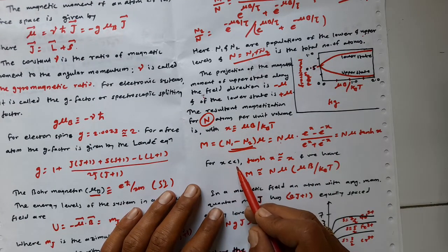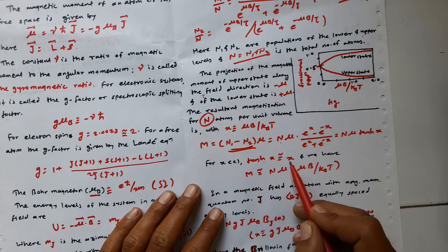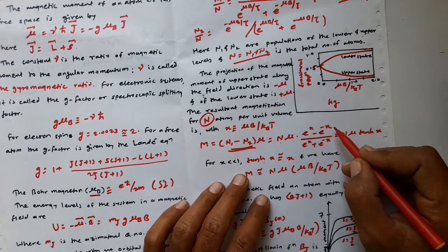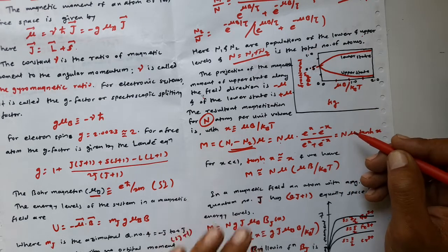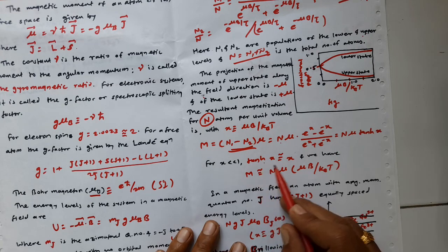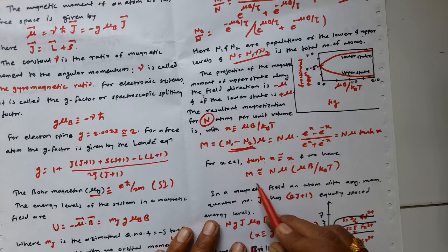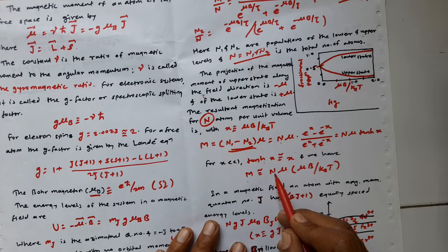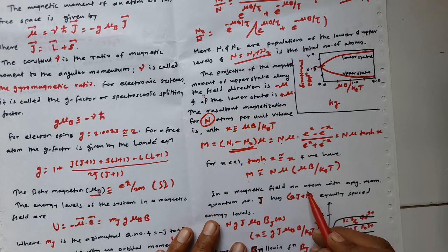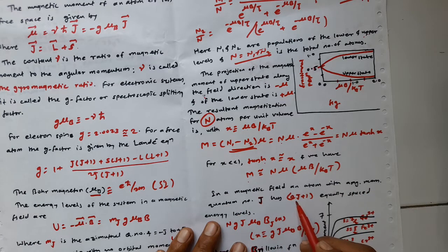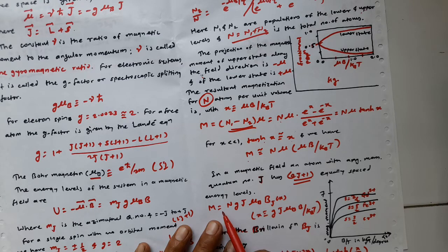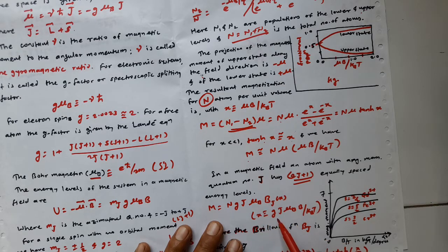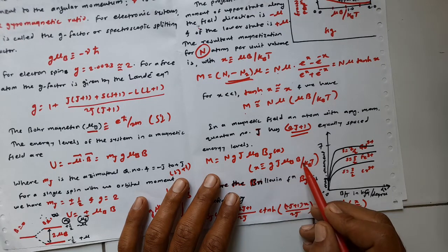For high temperatures where x ≪ 1, tanh(x) ≈ x, so the magnetization simplifies to M = Nμ · (μB/k_BT). In a magnetic field, an atom with angular momentum J has 2J+1 equally spaced energy levels, and the general magnetization is M = NgJμ_B · B_J(x), where x = gJμ_B B/k_BT and B_J is the Brillouin function.